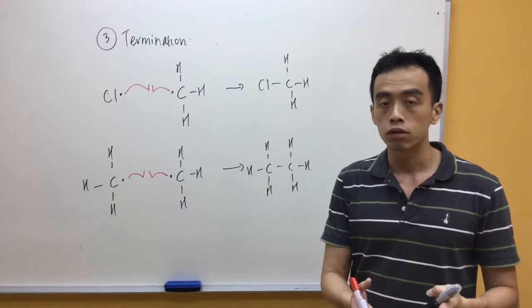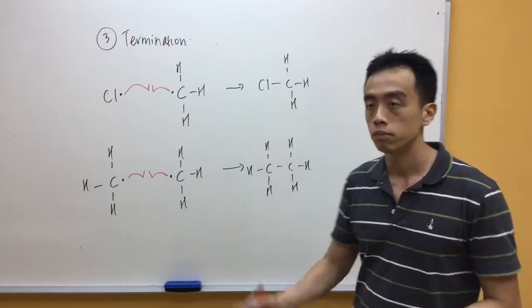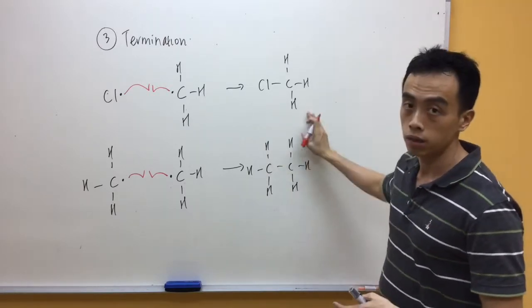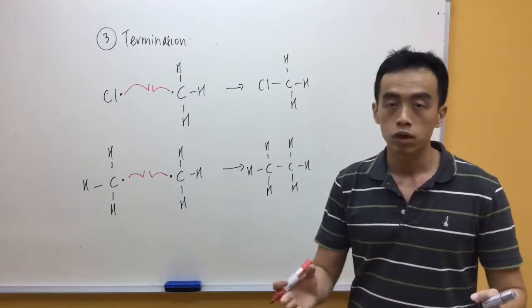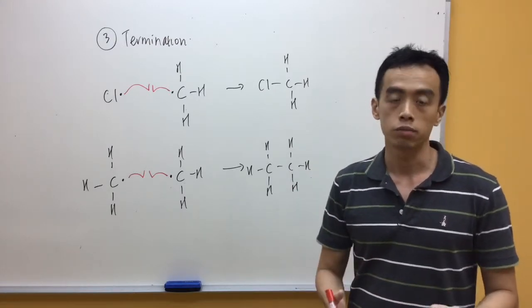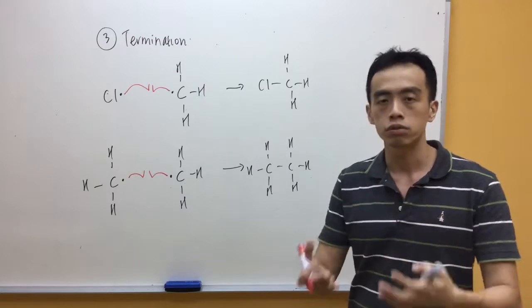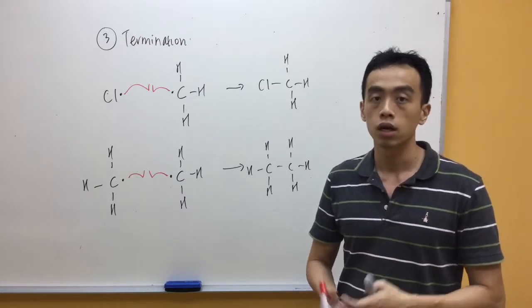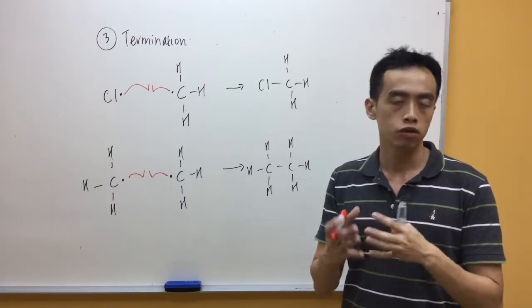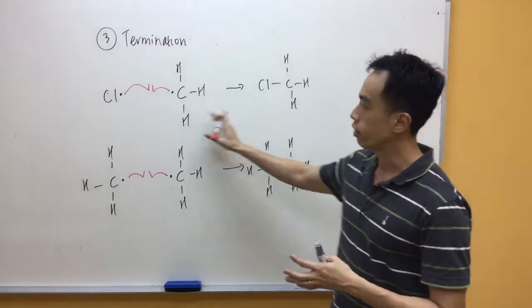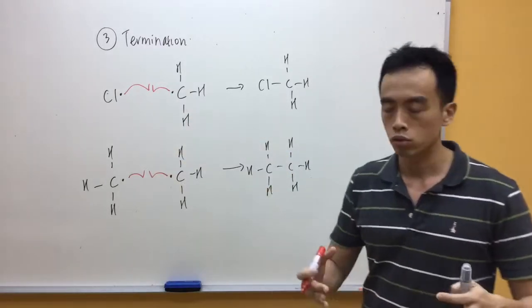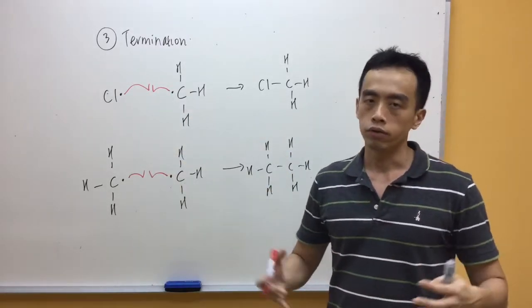Now certain things for us to think of for our termination step. The termination products are stable. So therefore they are no longer reactive, they no longer take part in the reaction. That's why it's considered as a termination step. Again, as the reaction proceeds for free radical substitution, the total number of radicals eventually will decrease as the radicals start to meet each other. So eventually the radicals will run out.